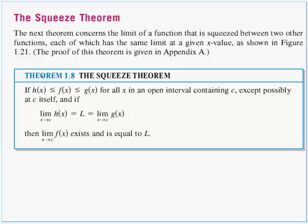Our squeeze theorem says we have three functions: h of x, f of x, and g of x. h of x always gives the smallest value — for any given input, h of x is always less than g of x, and f of x is always squeezed in between them. So if h(x) ≤ f(x) ≤ g(x) for all x in an open interval containing c, except possibly at c itself, and if the limits of both h(x) and g(x) as x approaches c are equal to the same limit L, then the limit of f(x) also exists and equals L.